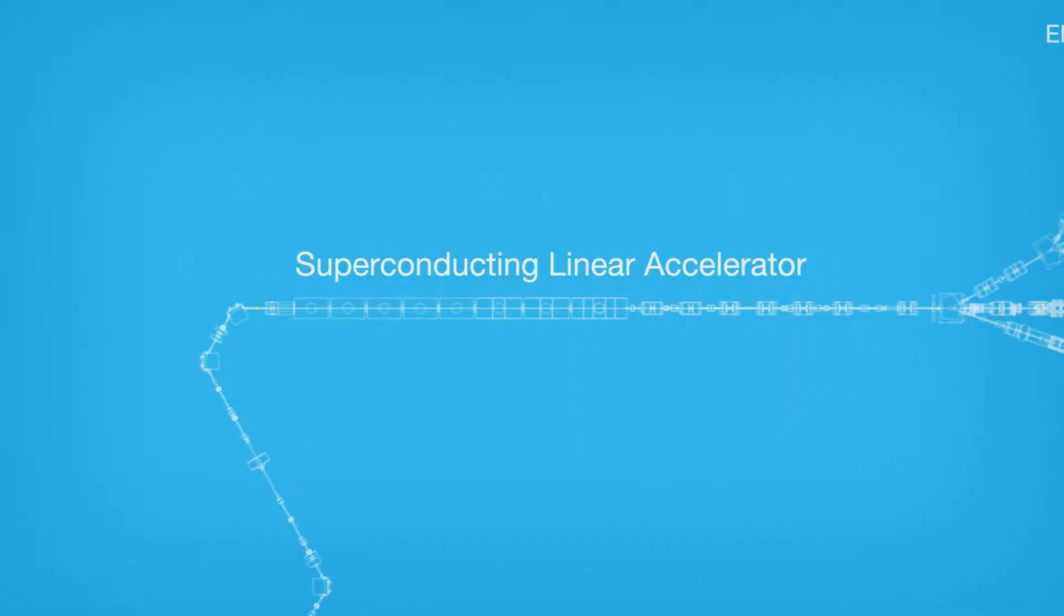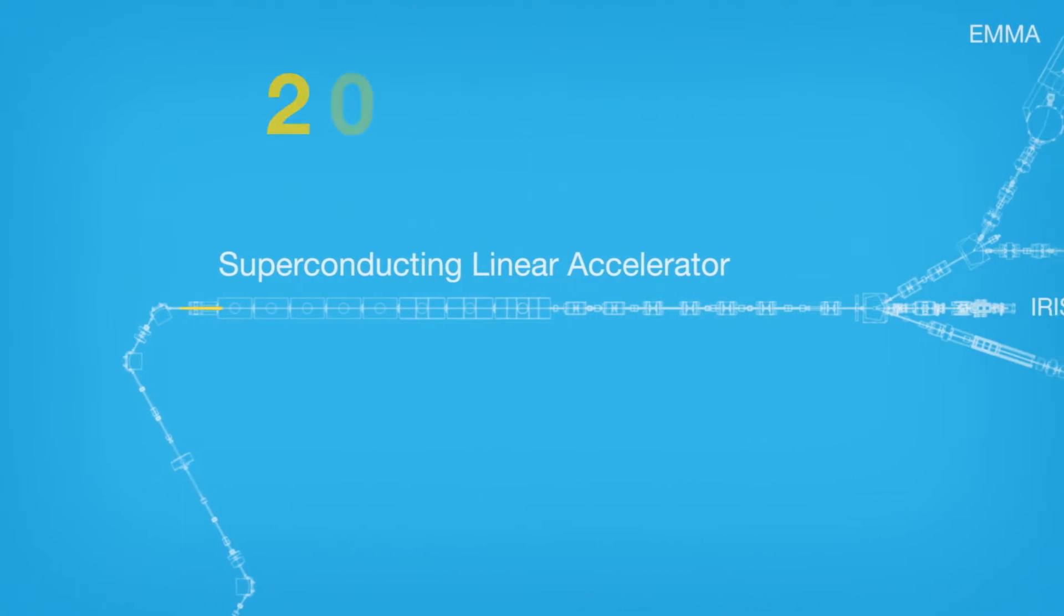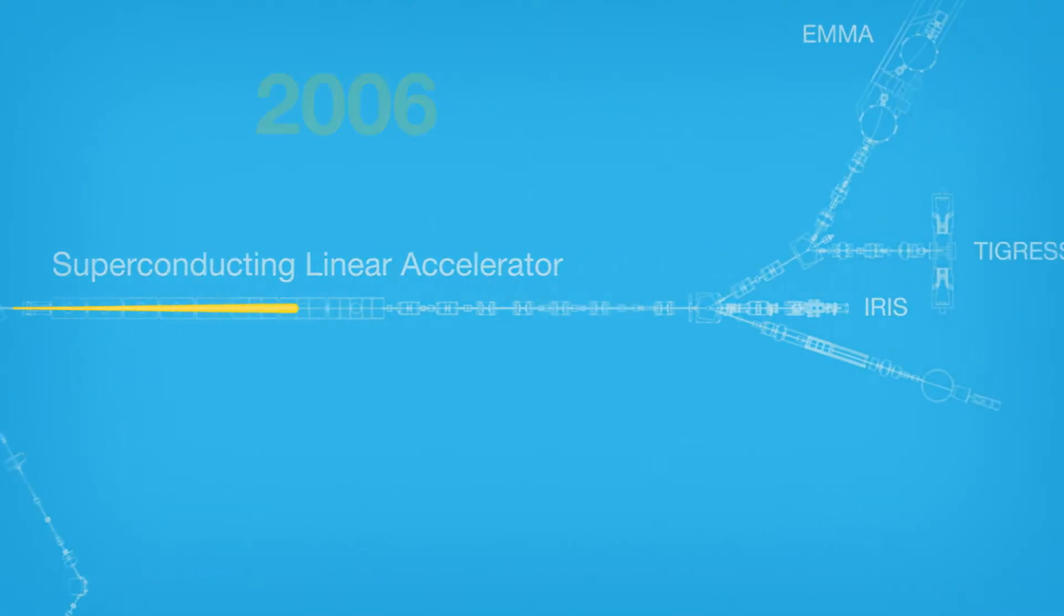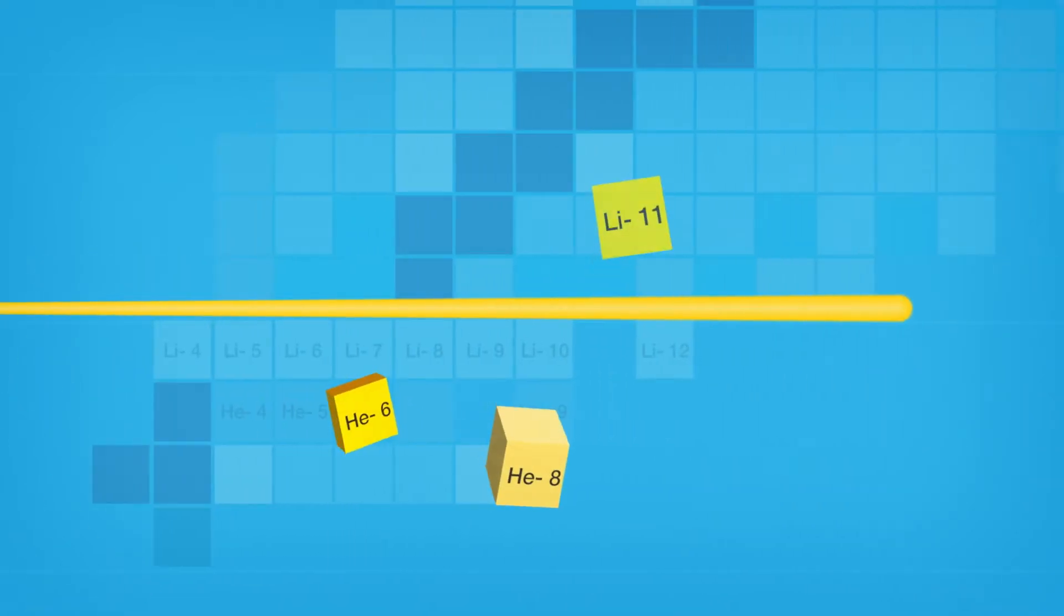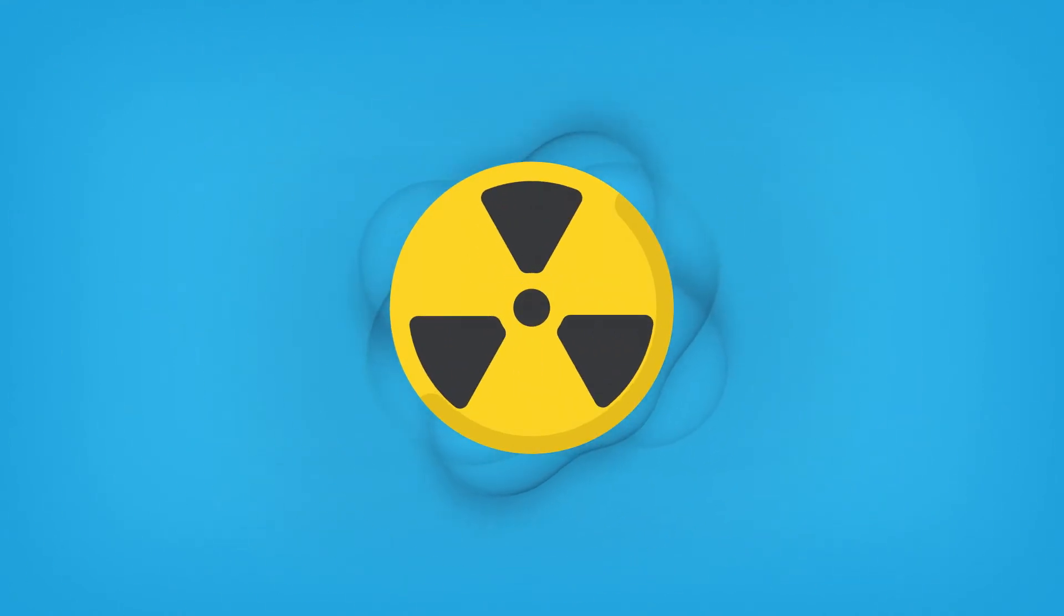The addition of Canada's first superconducting linear accelerator in 2006 and the production of intense beams of isotopes, such as lithium-11, put ISAC and Triumph on the map as a top radioactive beam facility.